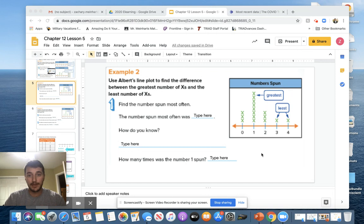So it says use Albert's line plot to find the differences between the greatest number of X's and the least number of X's. We're using the same thing we just created on the previous slide.